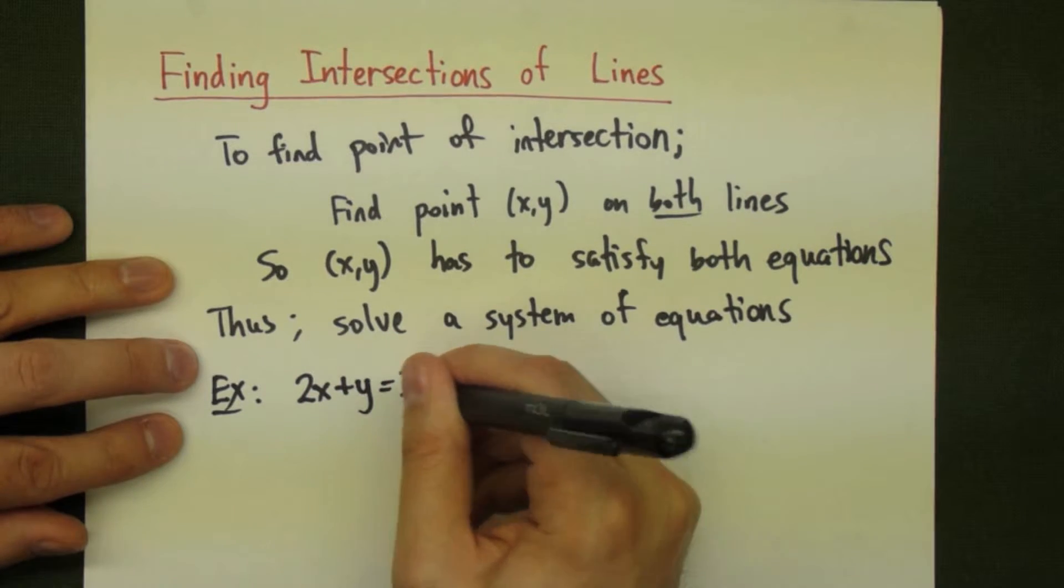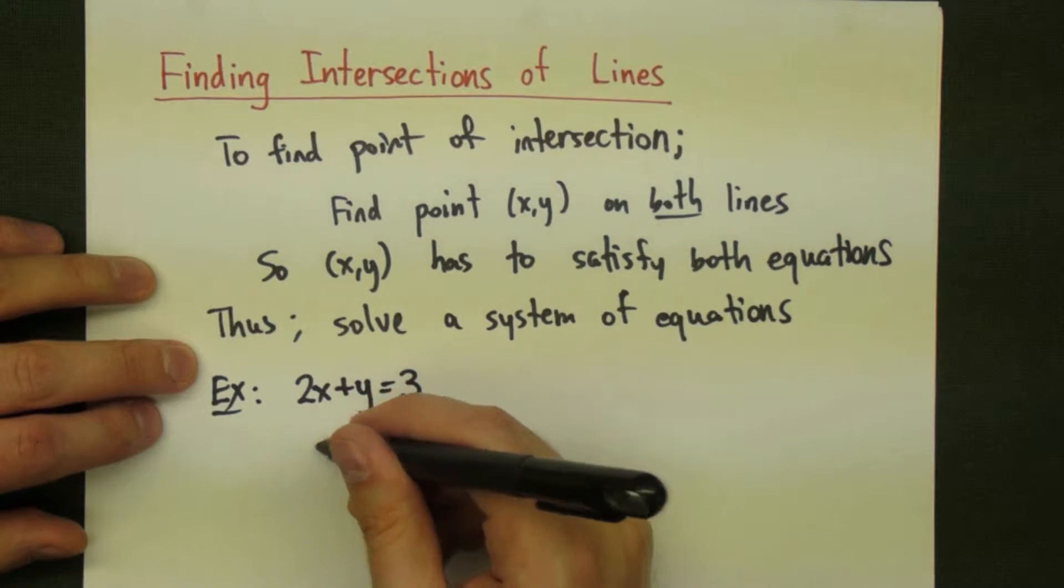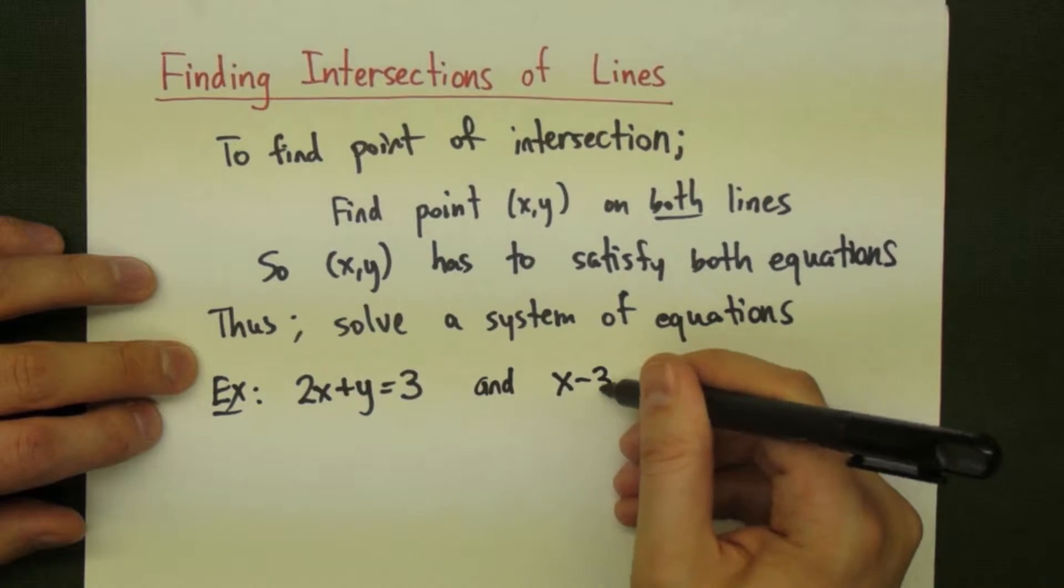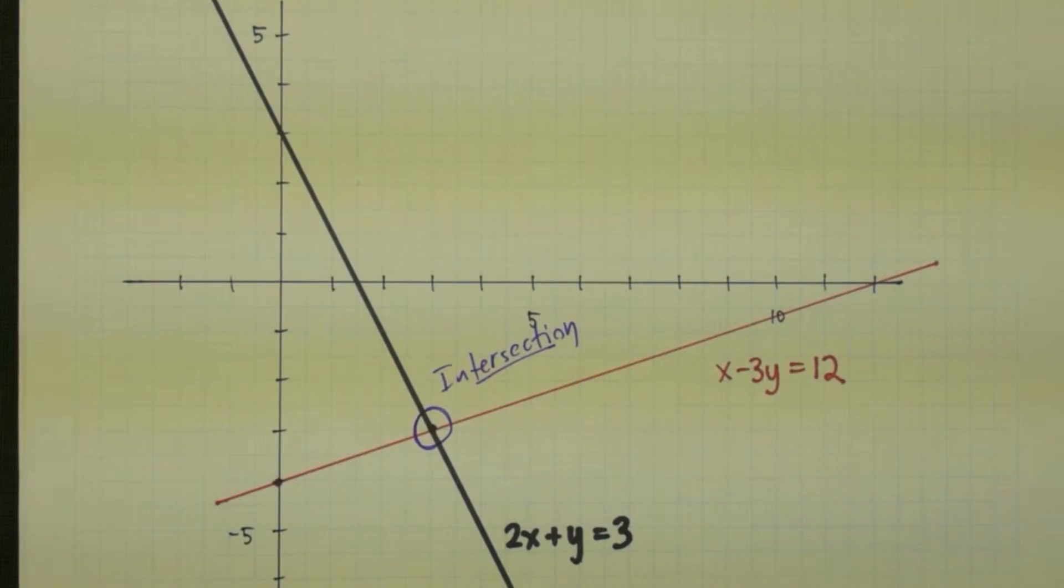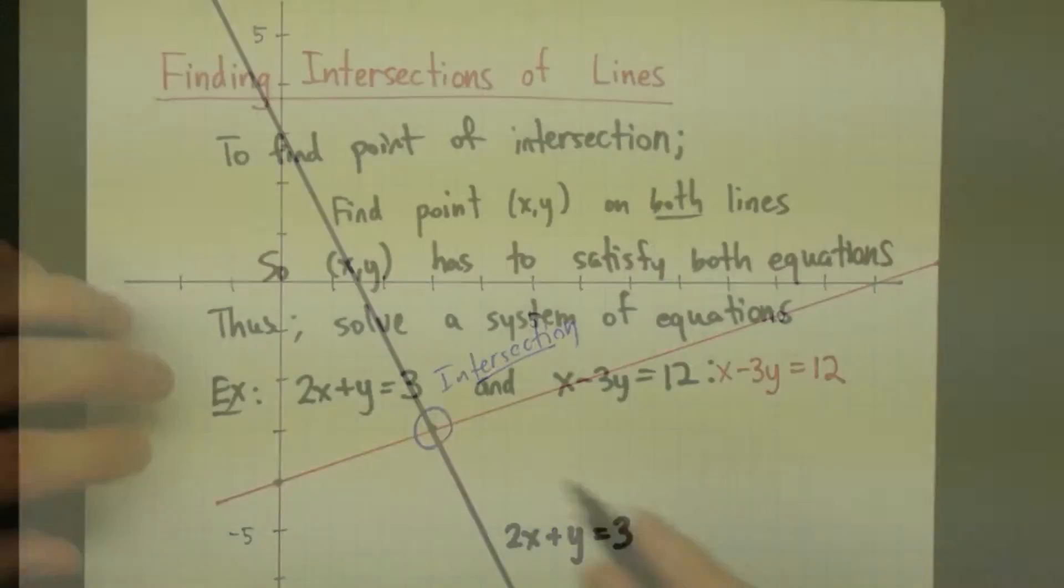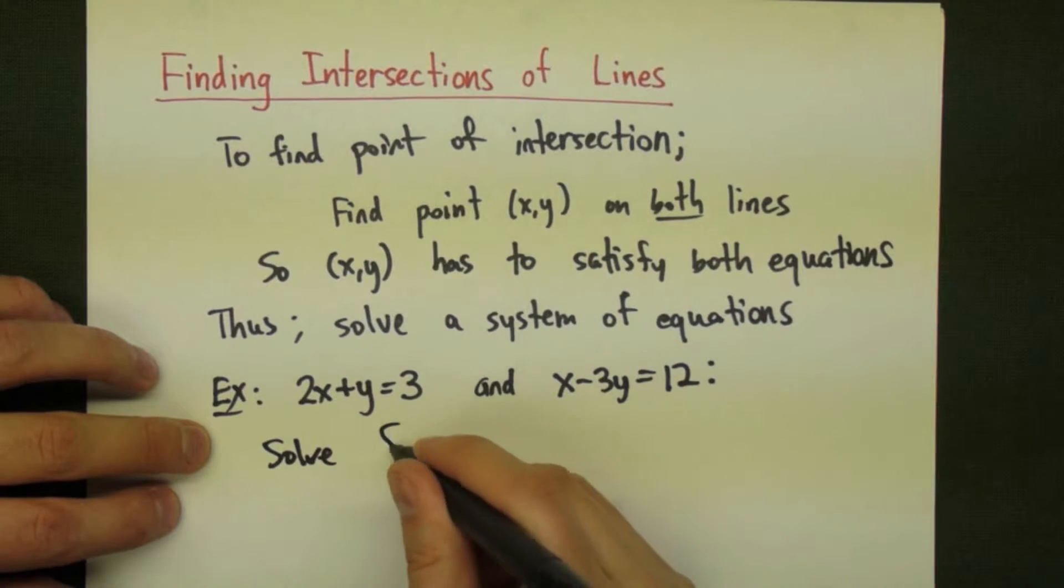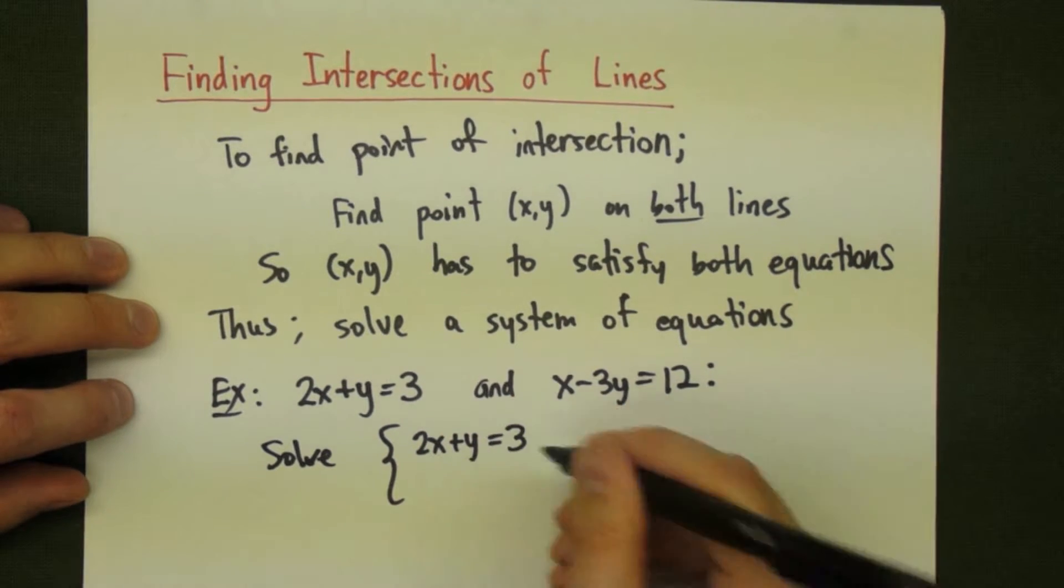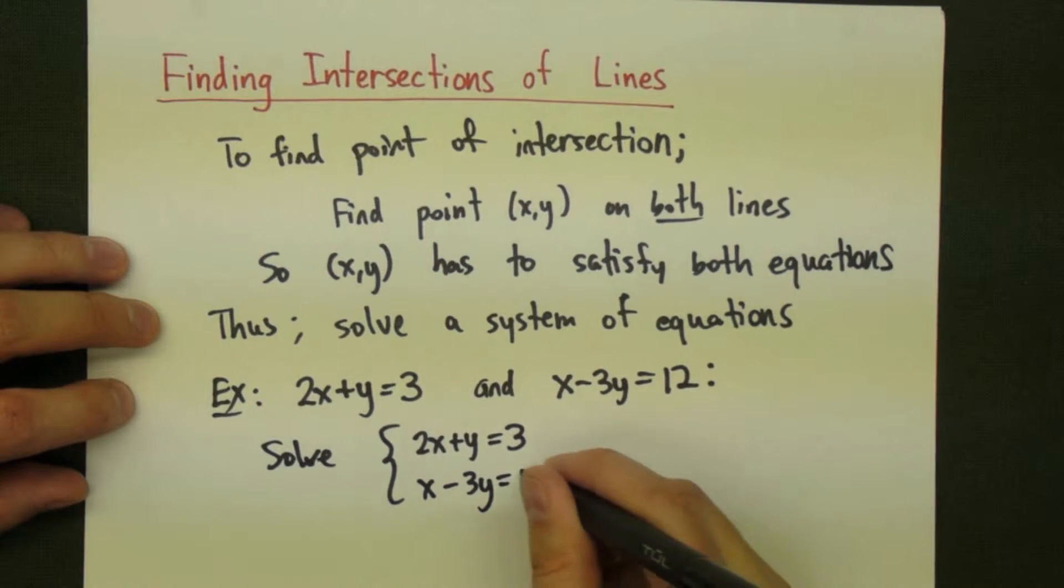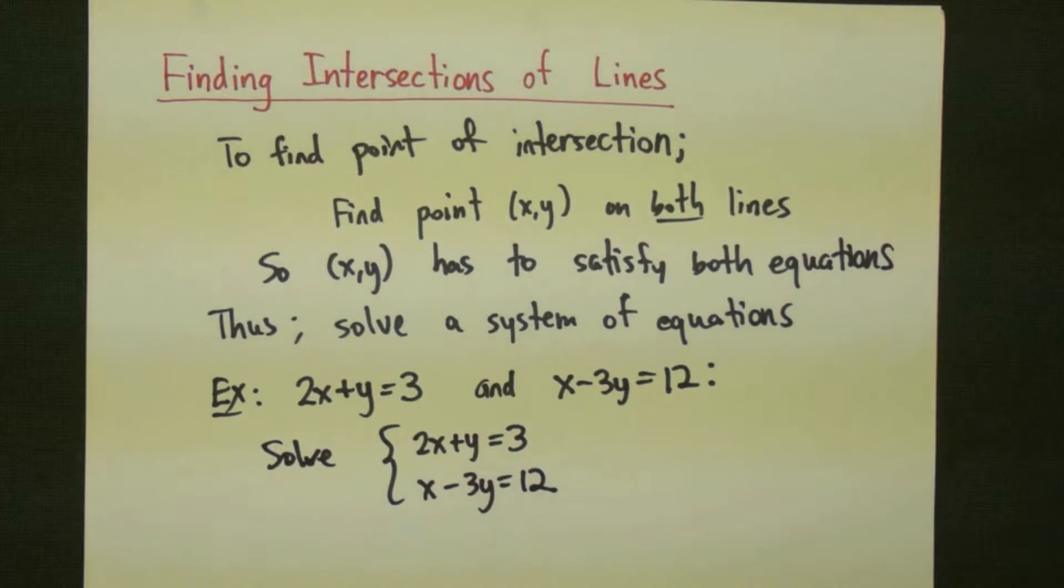An example is something like this. If we have the line 2x plus y equals 3 and the line x minus 3y equals 12, that's these two lines here, we are looking to solve the system of equations given by 2x plus y equals 3 and x minus 3y equals 12, just the two equations of the lines.